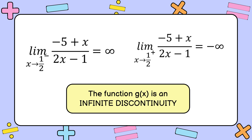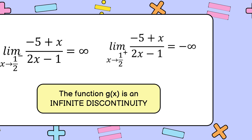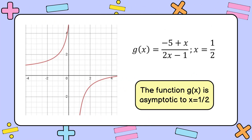Following the conditions for types of discontinuities, we conclude that g of x equal to negative 5 plus x over 2x minus 1 is an infinite discontinuity, since at least one side of the limits goes to infinity. This can be seen in our graph, which is asymptotic to x equal to 1 half.